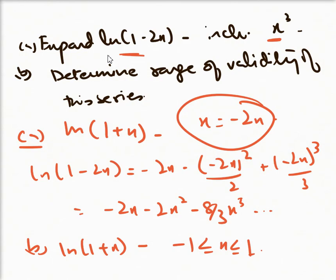In this series, we have replaced x with -2x. So the range of ln(1-2x) is -1/2 ≤ x < 1/2.